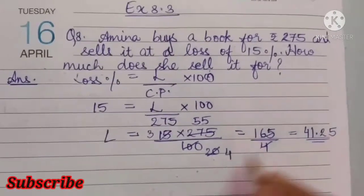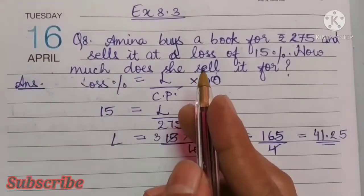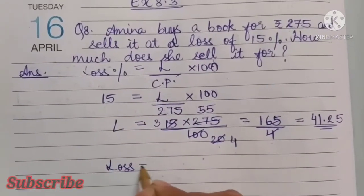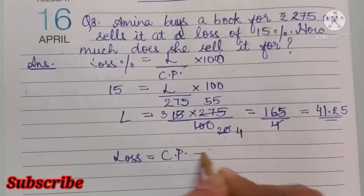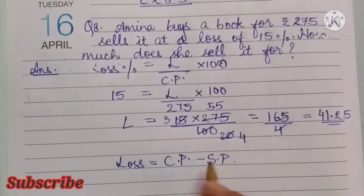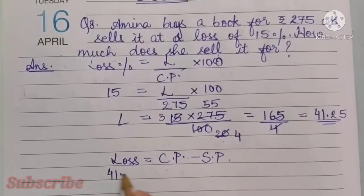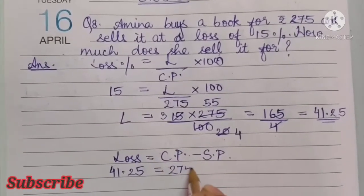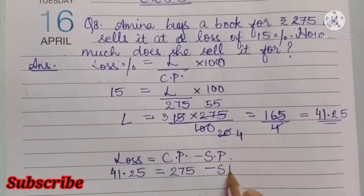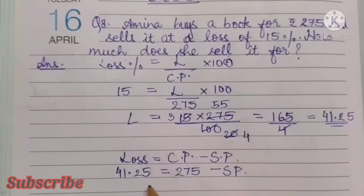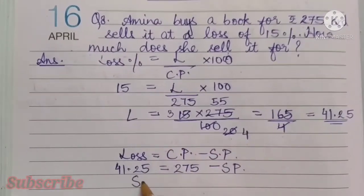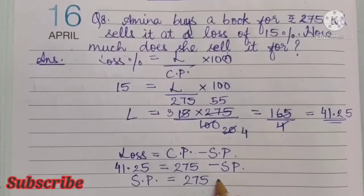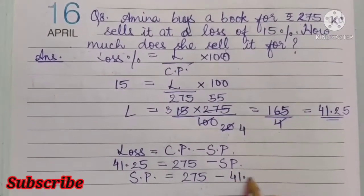This is the loss. Now we have to find the selling price. Loss is equal to CP minus SP. So loss 41.25 equals CP 275 minus SP. Let us transpose this. So SP is equal to 275 minus 41.25.